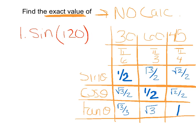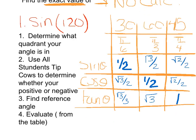Here are the rules that will help us solve these problems. Step 1: determine what quadrant your angle is in. Step 2: use 'all students tip cows' to determine whether you're positive or negative. Step 3: find the reference angle — that's your degrees of separation from the x-axis. Step 4: evaluate. Your answer should be one of the values from the table.